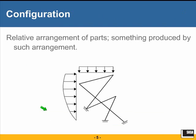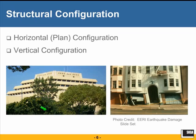In this entire discussion on structural irregularities, you will hear a lot about configuration — structural configuration. The dictionary meaning of the word is: relative arrangement of parts, something produced by such arrangement. This is what we are talking about when we mention structural configuration in connection with irregularities. We need to consider horizontal configuration — how parts are arranged in plan — and also vertical configuration — how parts are arranged as you go up the height of a structure. Both have impact on how a structure responds to earthquake ground motion.